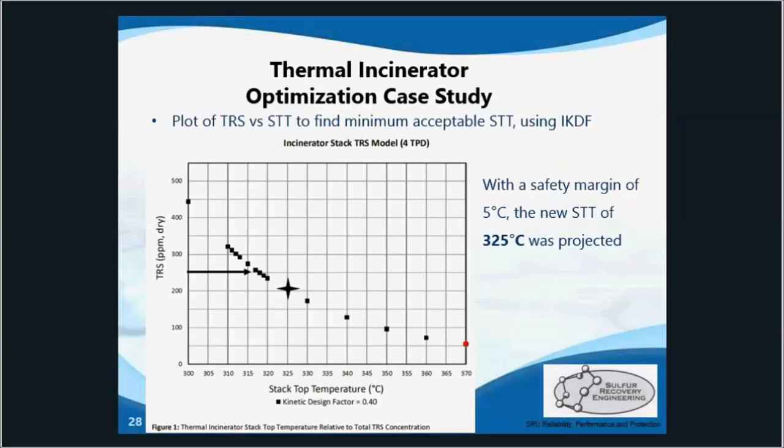This curve finds the minimum acceptable stack top temperature at the target of 250 ppm total reduced sulfur, TRS. Starting at 250 on the left and going over, that drops down from our curve at somewhere between 315 and 320 degrees Celsius. With an added 5-degree safety margin, we recommended the final acceptable temperature of 325 degrees Celsius.